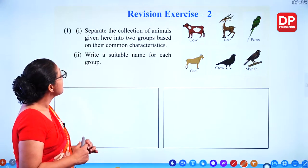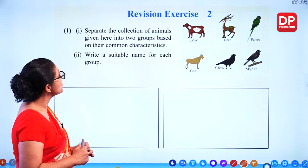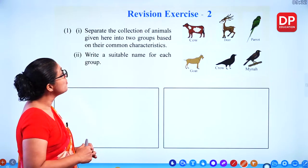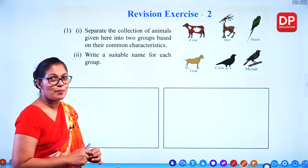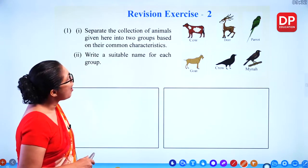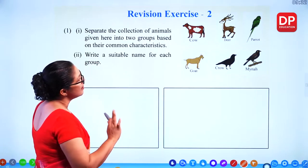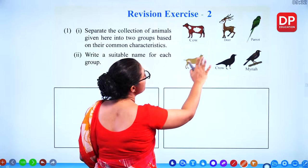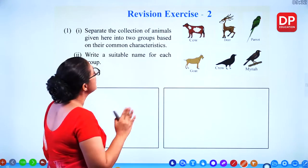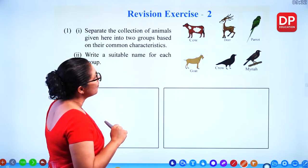Question number 1: separate the collection of animals given here into two groups based on their common characteristics. Write a suitable name for each group. So the topic is selection — how do we select these pictures? There are animals and birds. How can we separate them into two groups?